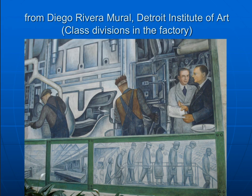Detroit, formerly known as the Motor City due to its heavy dependency on automobile manufacturing, was a city with very strong class divides. In this 1932–1933 mural by Mexican painter Diego Rivera, he depicts Ford auto workers in the Ford Motor Company River Rouge plant, suggesting that he was highly sensitive to class divisions in the auto industry.